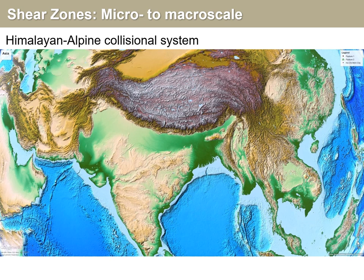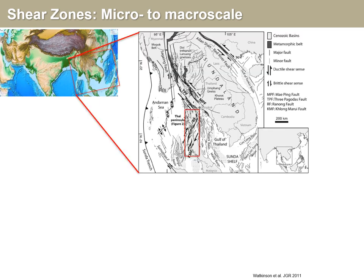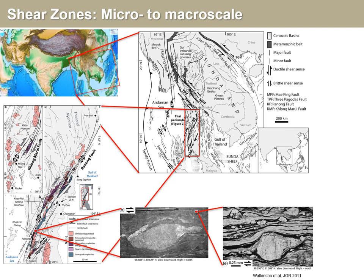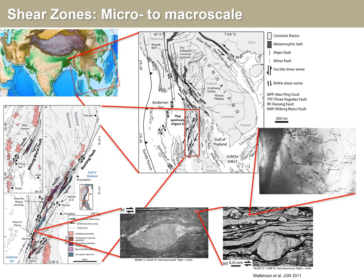If we go to the Himalayan alpine collisional system, we see that the edges of the Himalayan segment look like shear zones. And if we look in more detail, we can see somewhat smaller scale structures that also seem to be shear zones. Let's look at the eastern part of the system — zoom in there, we can see smaller shear zones and networks. Zoom in on one of those, we can see that that consists of smaller scale structures again. We can continue all the way down to the outcrop scale, like a thin section, and look at the microstructures and even go into individual crystals and look at the intracrystalline deformation that is related to the shearing in this zone.